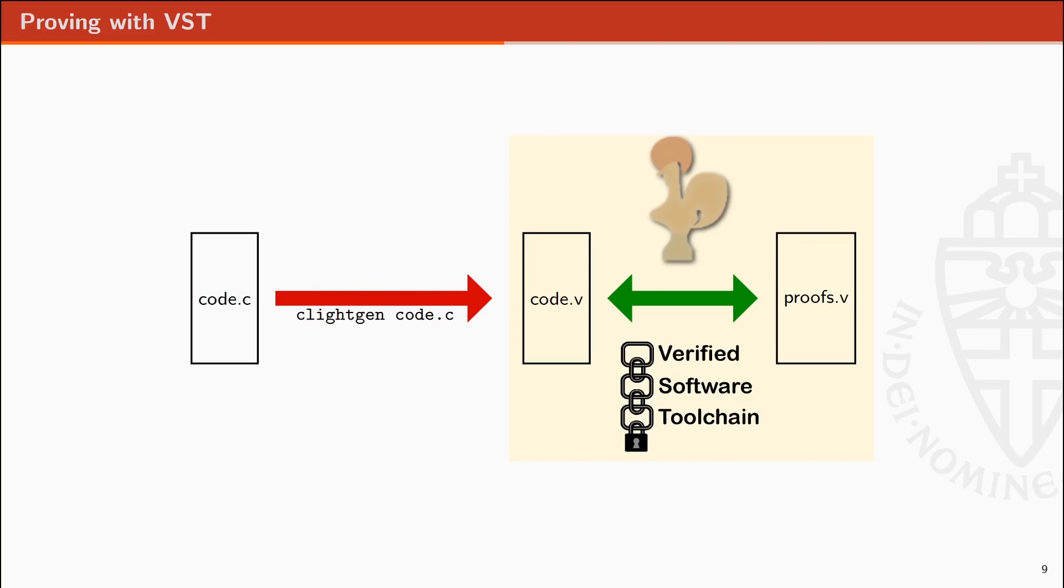From C to Coq. In order to verify C code, we use the Verifiable Software Toolchain developed at Princeton by Appel et al. VST works on the output of ClightGen, the first compilation stage of CompCert. As a result, we compile TweetNaCl from C into Clight, a DSL in Coq.